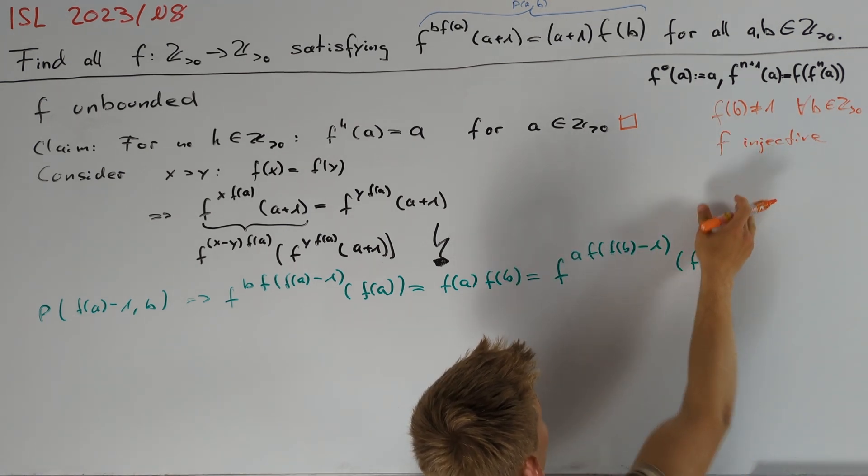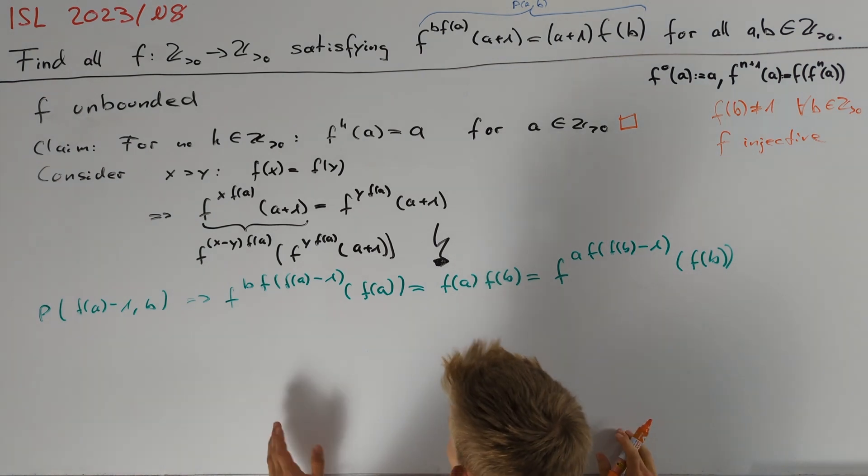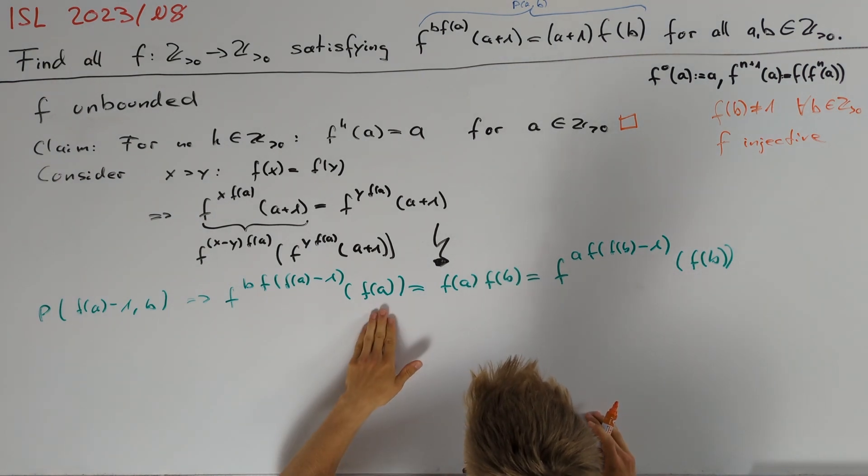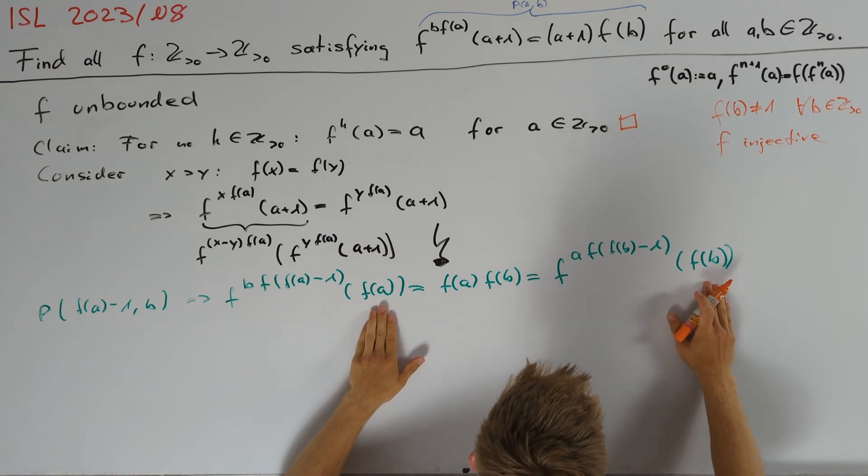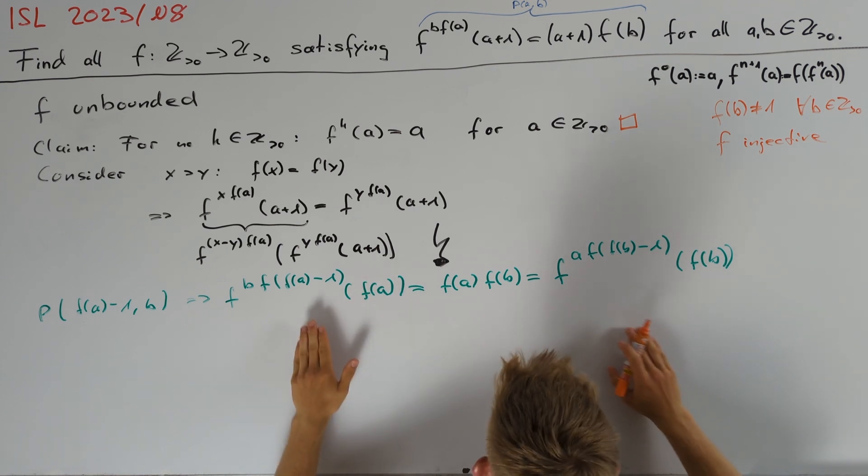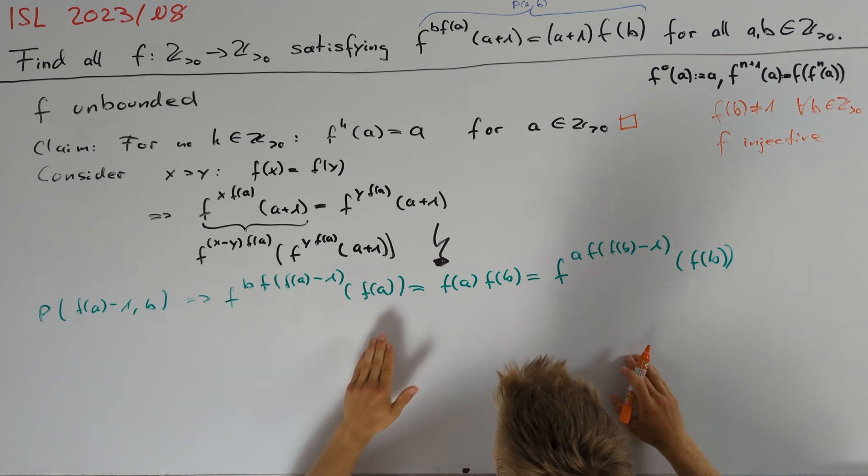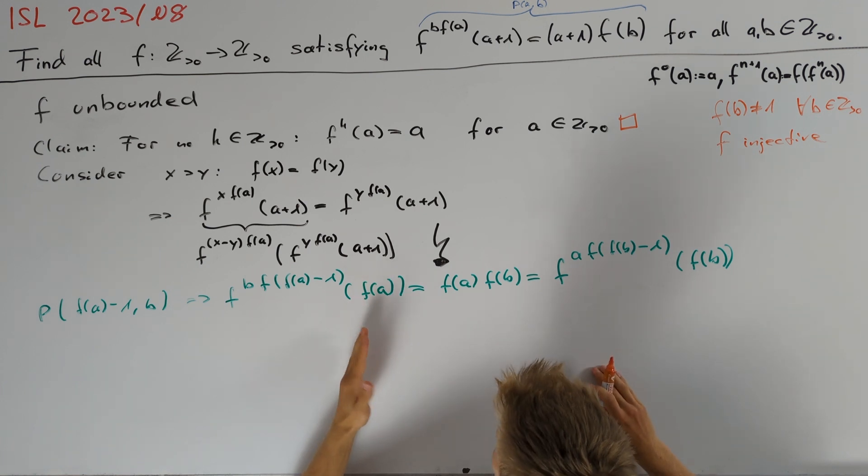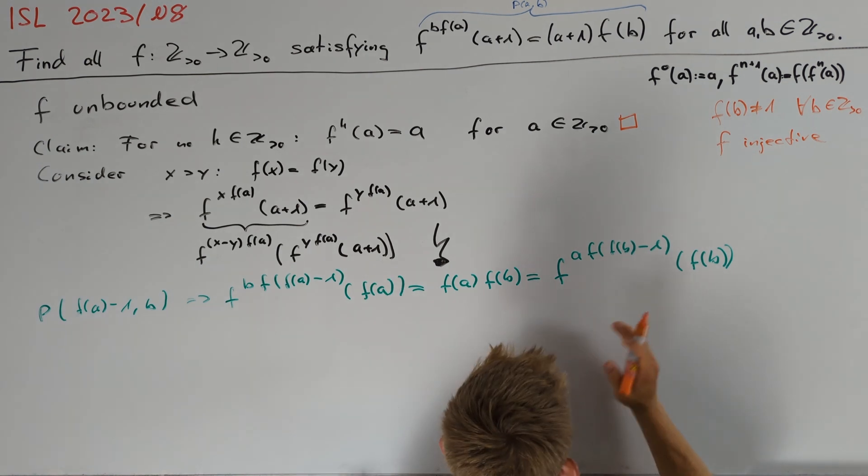We can now use that f is injective and erase one f from both sides until at one point either on the left hand side there is a single a or on the right hand side there is a single b. If a is not equal to b, then after erasing the f's, we cannot end up with a equals b. And therefore, we know that on one side we only have the letter and on the other side we have some f's.